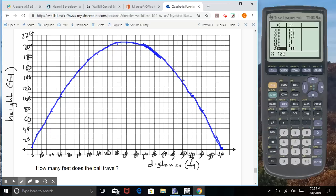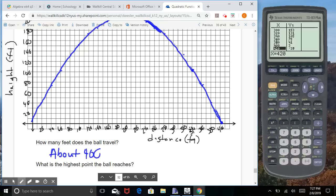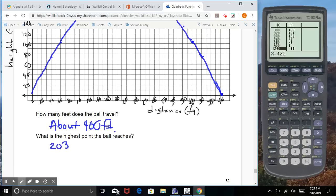So how many feet does the ball travel? We can say, it's not exact, but we know it's about 400 feet. And what is the highest point the ball reaches? This we know is the vertex, and the vertex was at 200 and 203, so the vertex is 203 feet high.